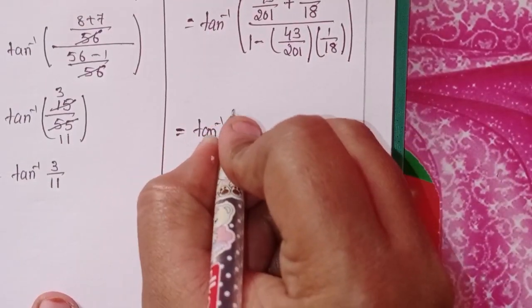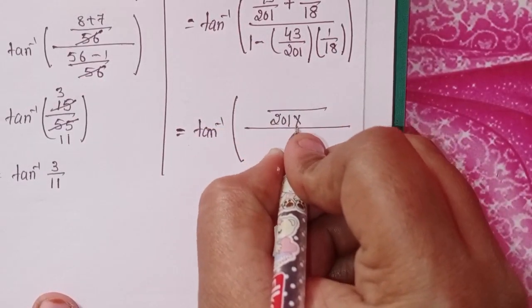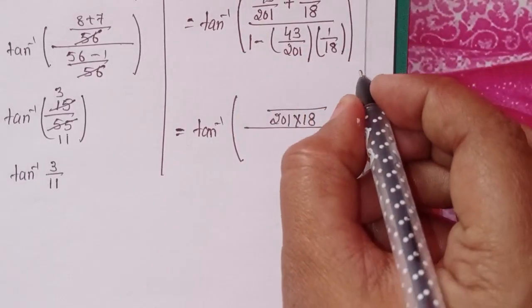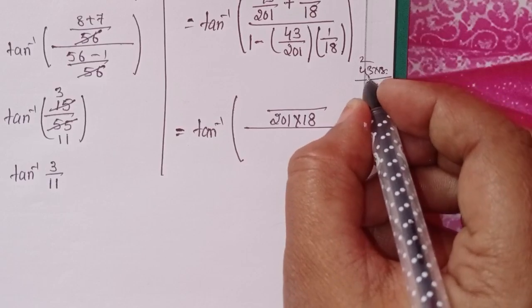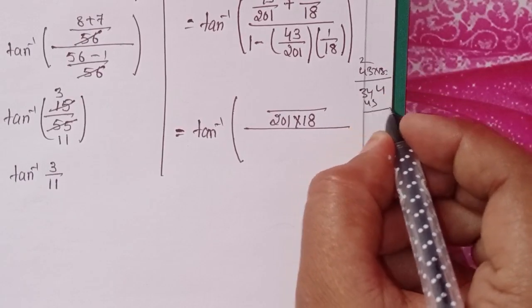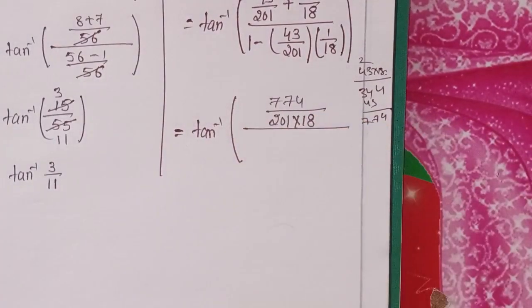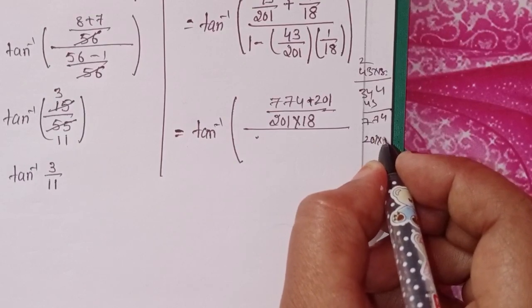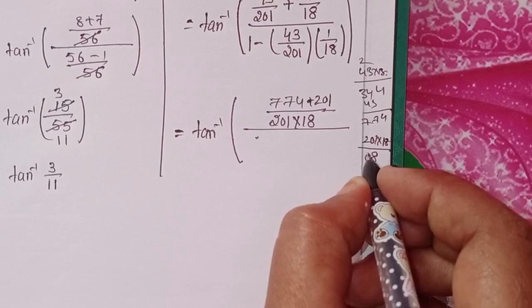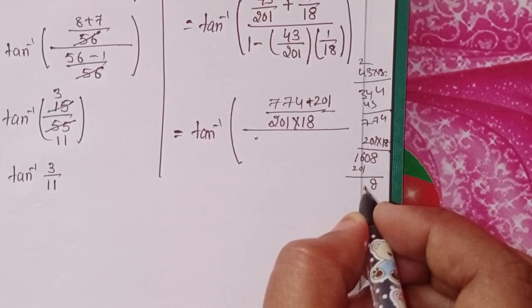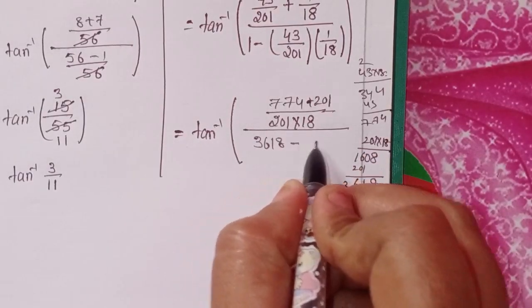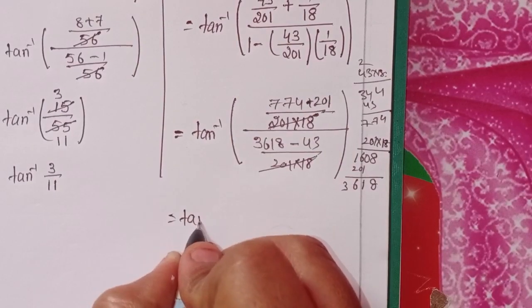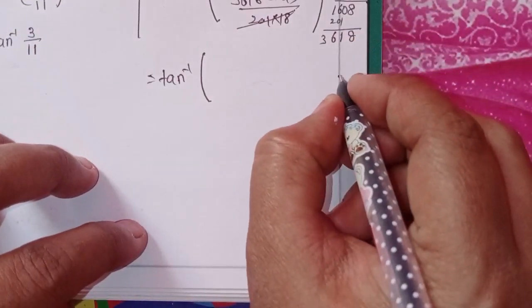Applying the formula: tan inverse of 1/201 plus 1/18, divided by 1 minus 1/201 into 1/18. LCM in numerator is 201 into 18: 43 into 18 is 774, plus 201 gives numerator terms. 43 into 18 is 774 and 201 into 1 contributes to numerator. Denominator: 201 into 18 minus 43. Computing: 201 into 18 is 3618, minus 43 gives 3575. Numerator: 774 plus 201 gives 975. These cancel, giving tan inverse 975 by 3575, which simplifies to tan inverse 3 by 11.